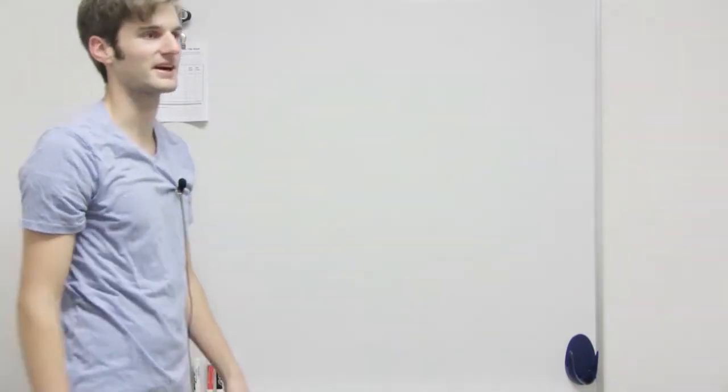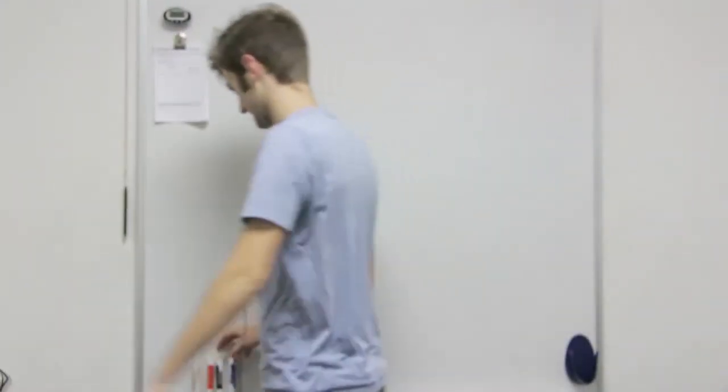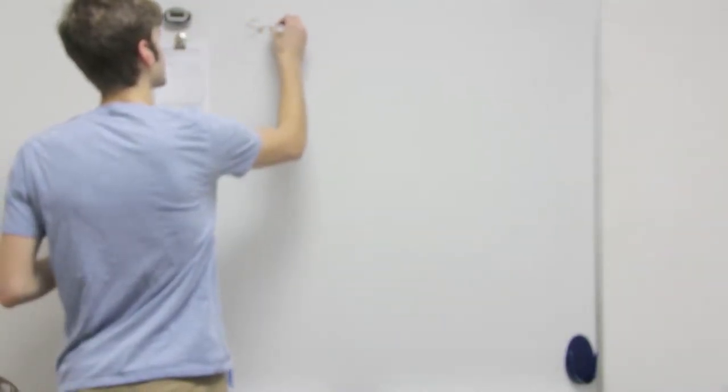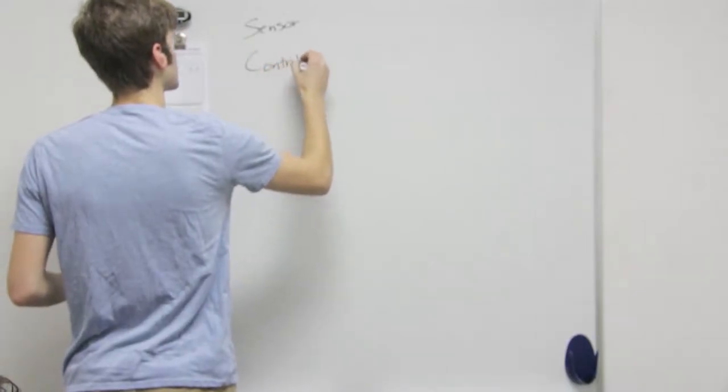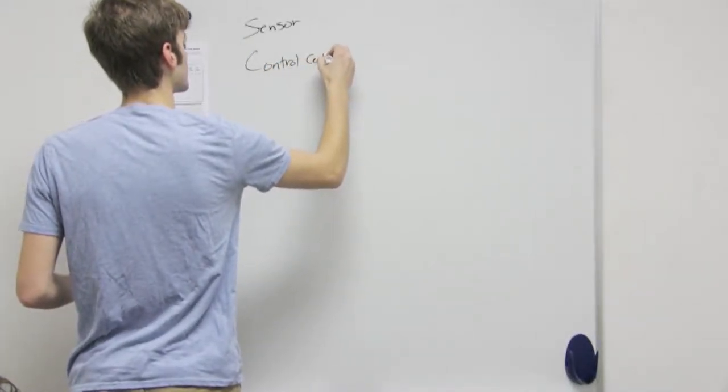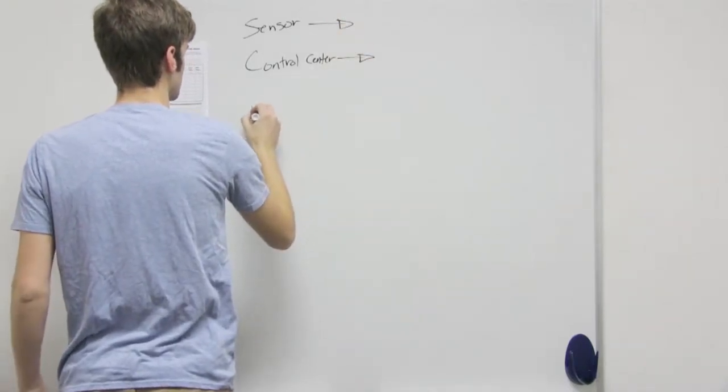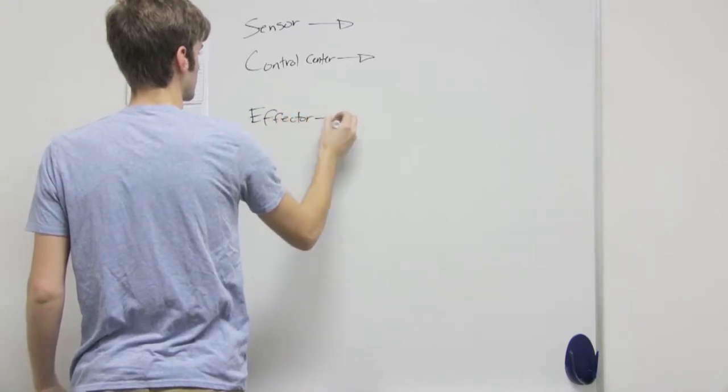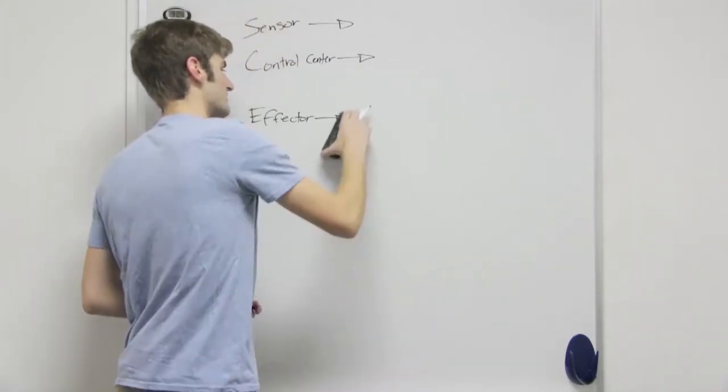Hang on, I need to go grab an eraser. Okay, so it is a negative feedback loop. You're completely right. So we have three parts. What do you think is the sensor?